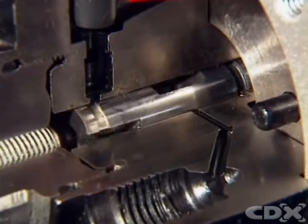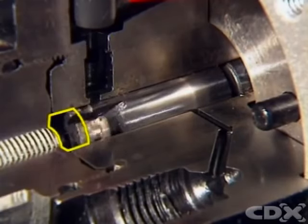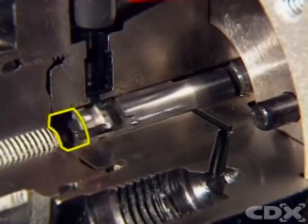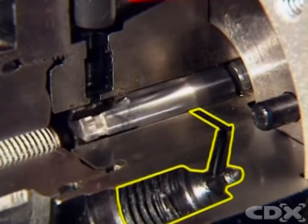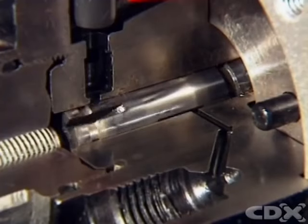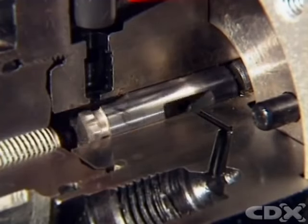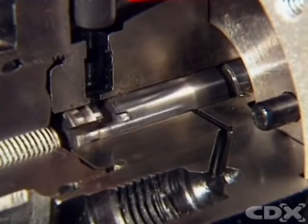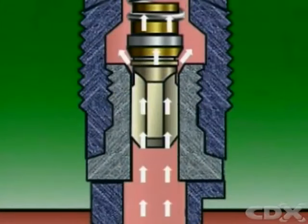The plunger's rotation operates the fuel inlet port to the pumping chamber, and at the same time distributes pressurized fuel to the correct injector. The reciprocating motion pressurizes the fuel in the pumping chamber, and the plunger's pumping action forces fuel through a delivery valve to the injector.